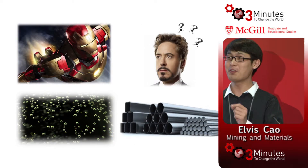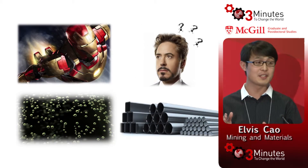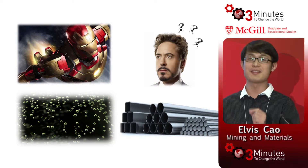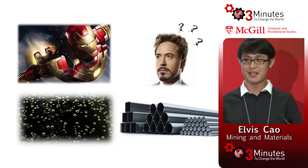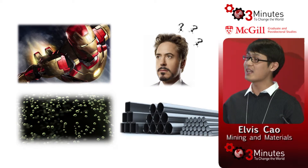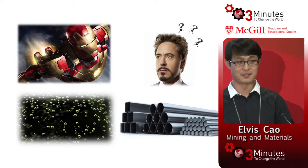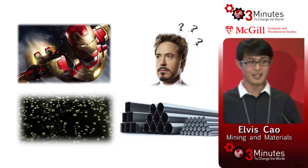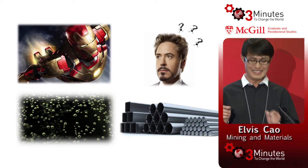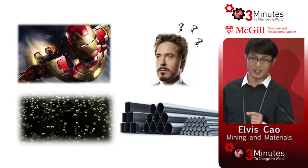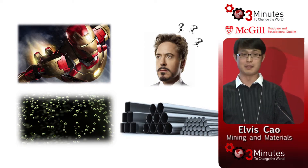In the famous Marvel comics, Tony Stark has built a lot of armors used as Iron Man. We are all familiar with the story, but the early design of the armor had an icing problem at high altitudes. In the comics, Tony built a special alloy — gold titanium — and solved the icing problem.